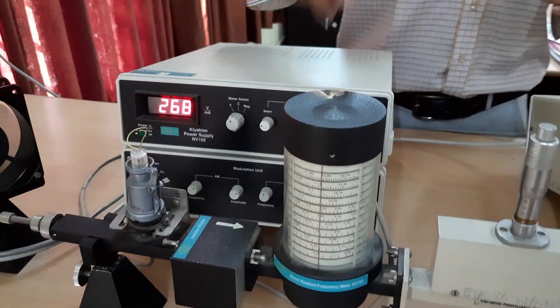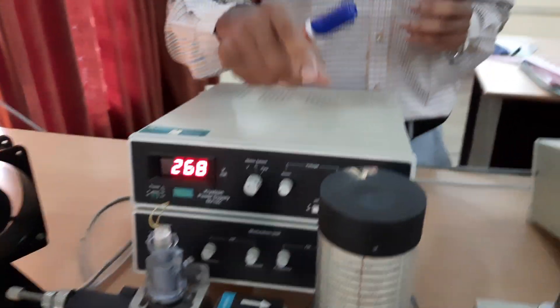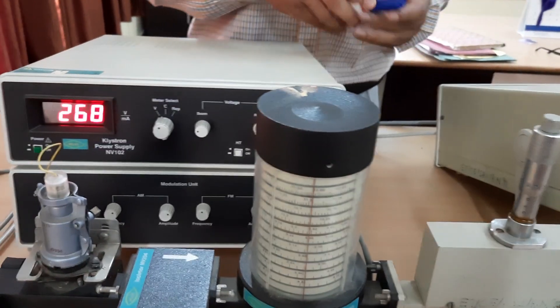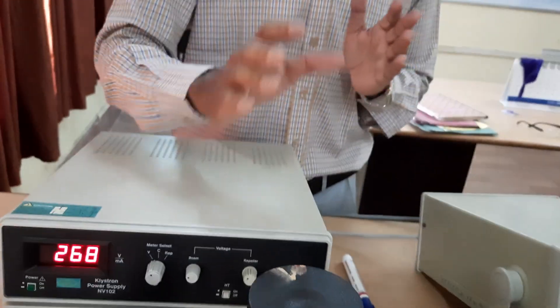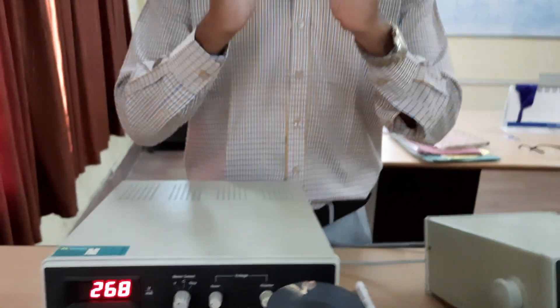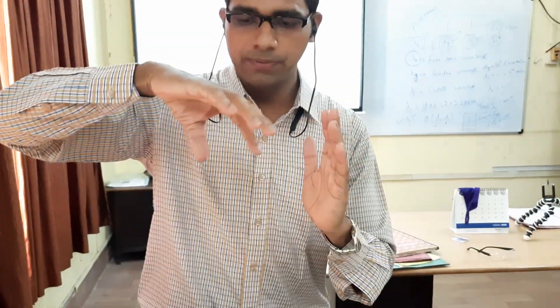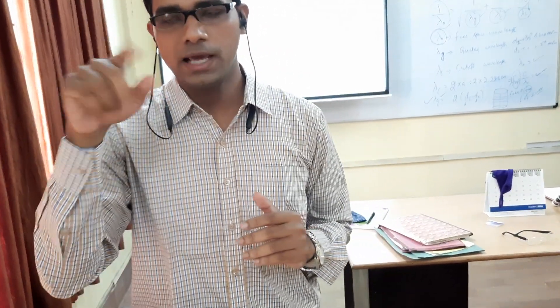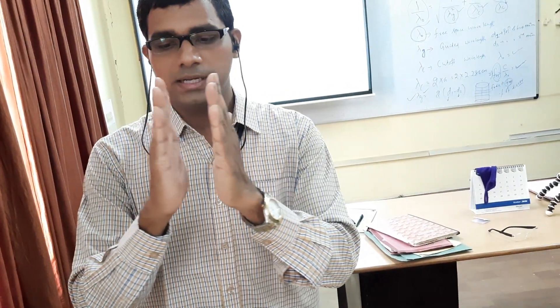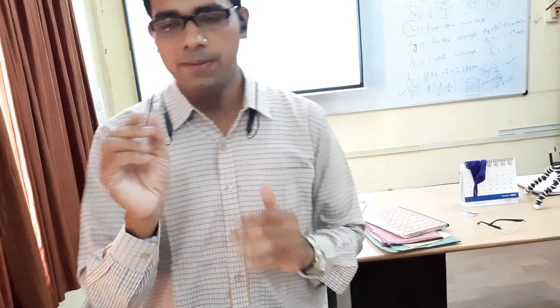This is called the frequency meter. I told you in the past experiment that I would discuss the principle of the frequency meter in the second experiment. The frequency meter is actually a resonant cavity. You have two parallel plates, and when you rotate the frequency meter, there is a variation in the distance d between the two plates. You know that capacitance C equals epsilon times A divided by d, so capacitance depends upon the distance between the two plates.